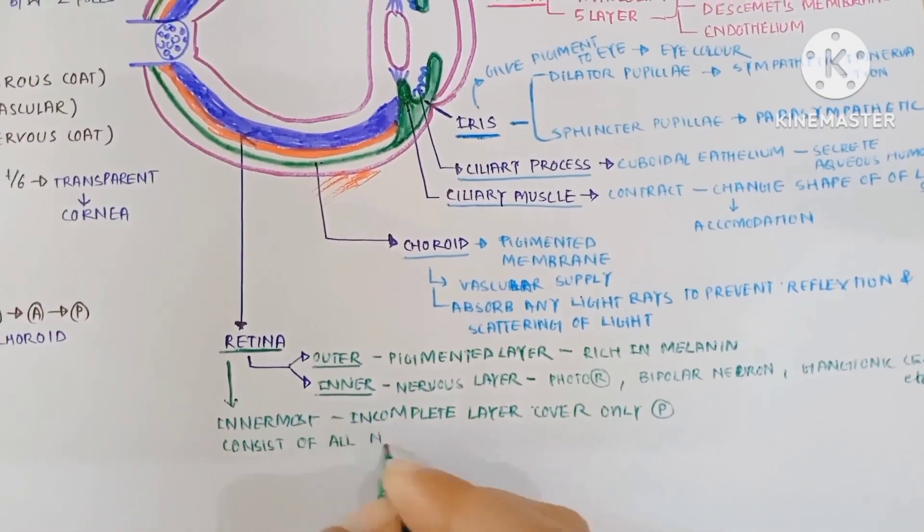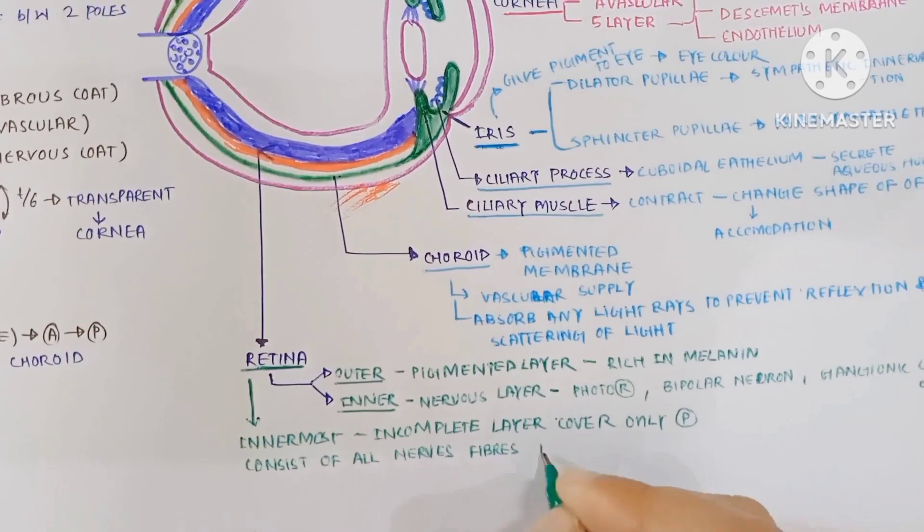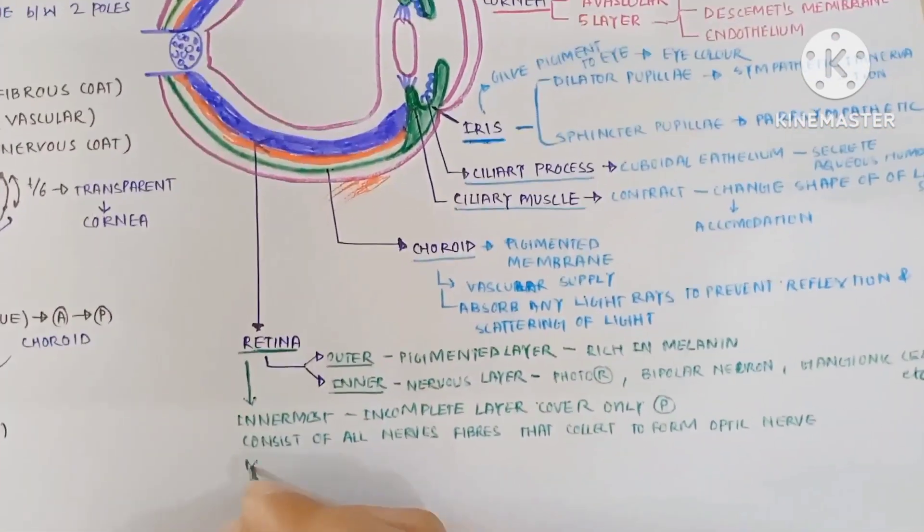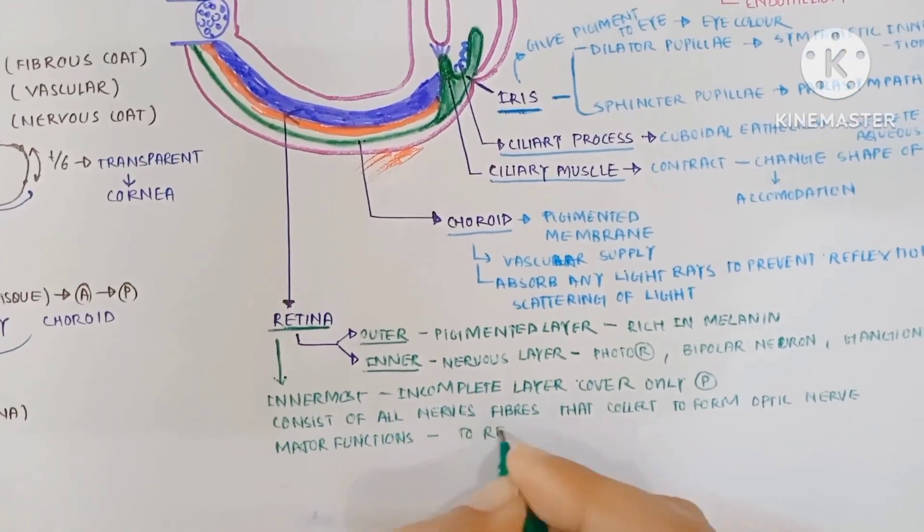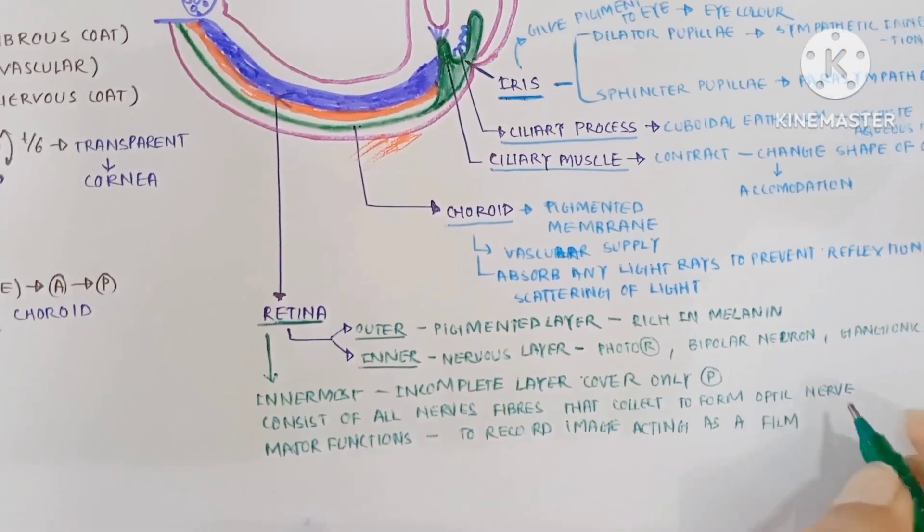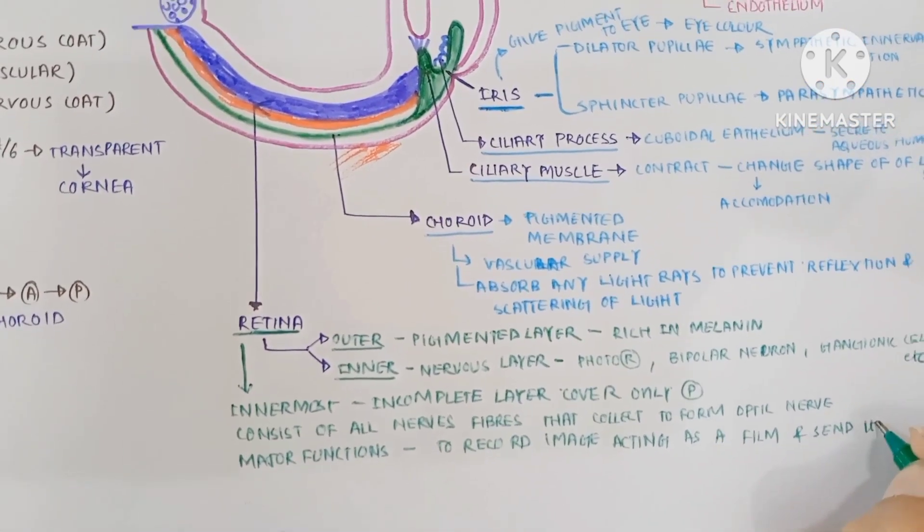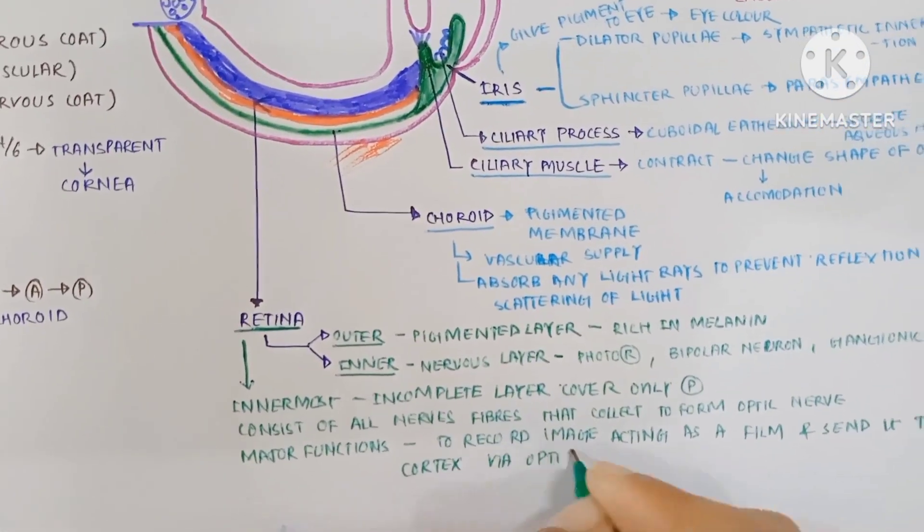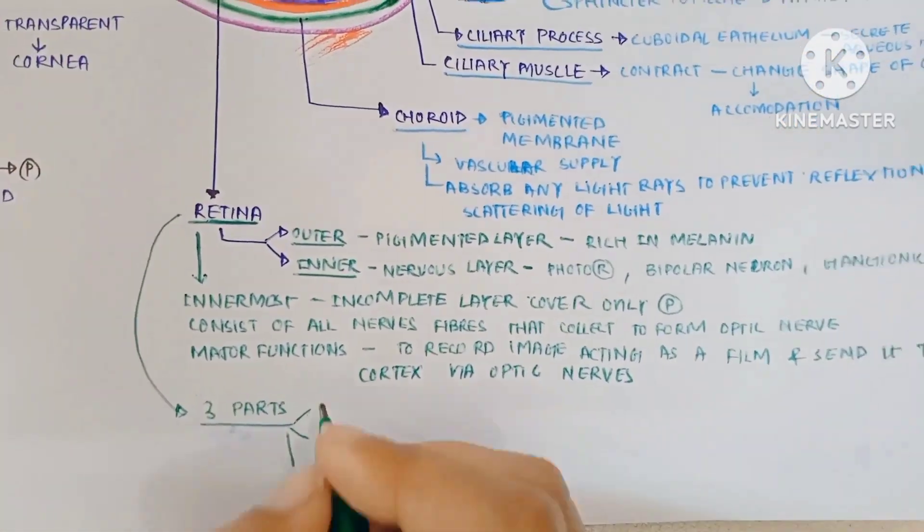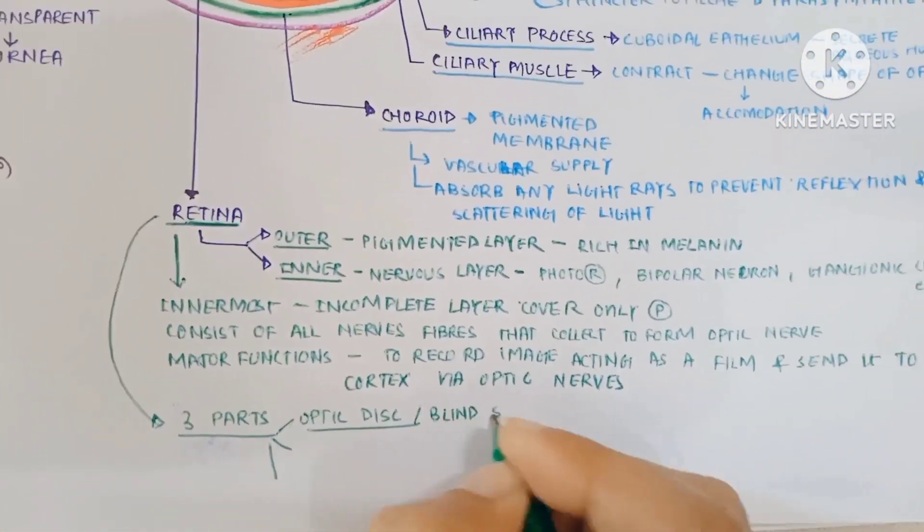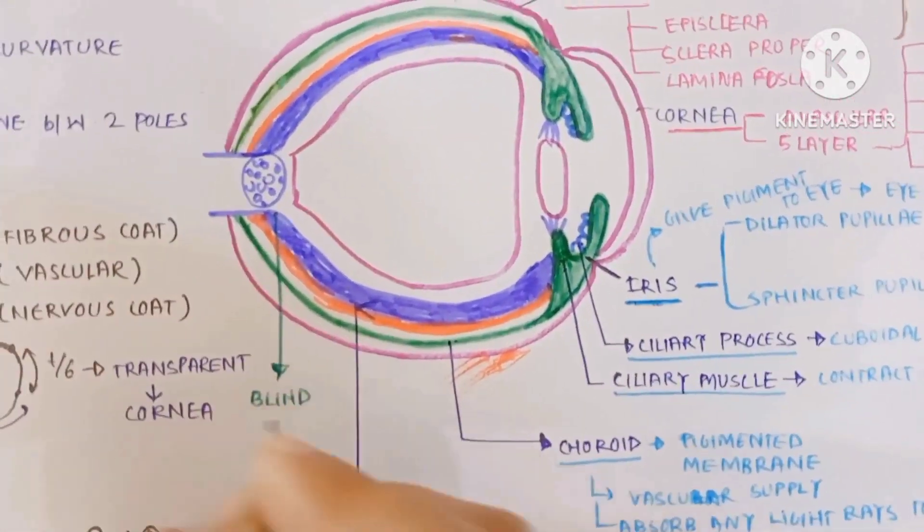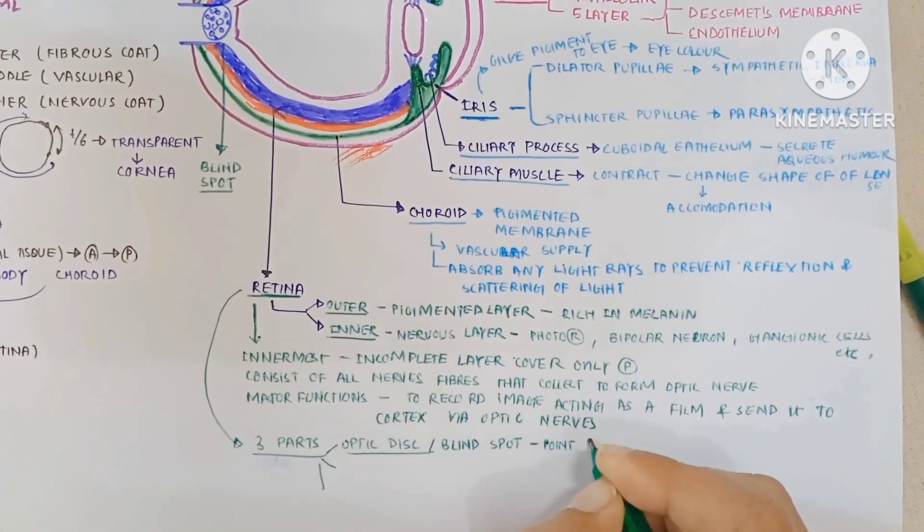It consists of all nerve fibers that collect to form the optic nerve. The major function of the retina is to record the image, acting as a film, and send it to the cortex via the optic nerve. The retina has three parts. The first part is the optic disc which is called the blind spot.